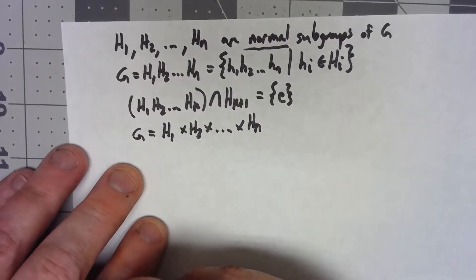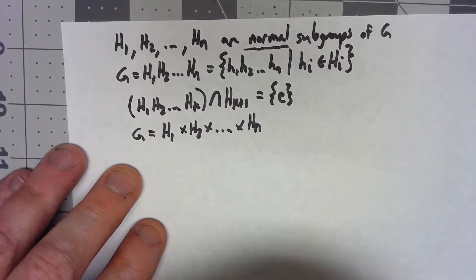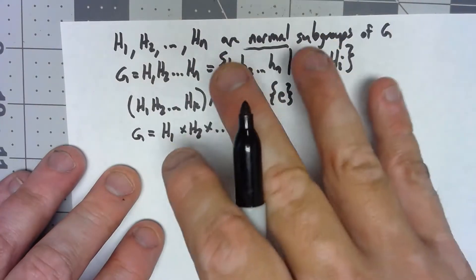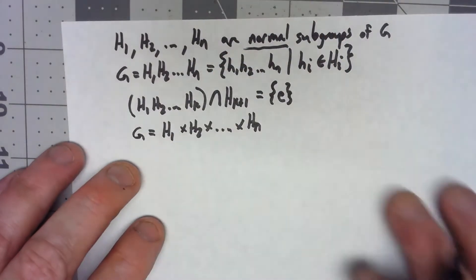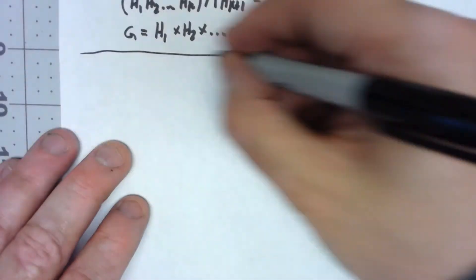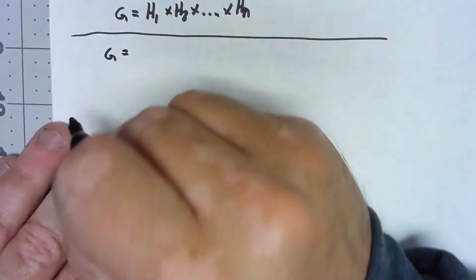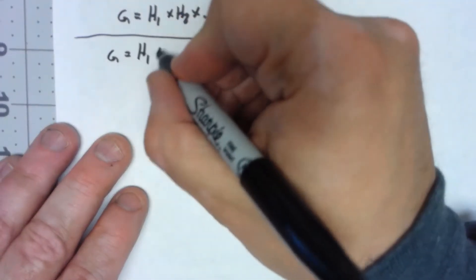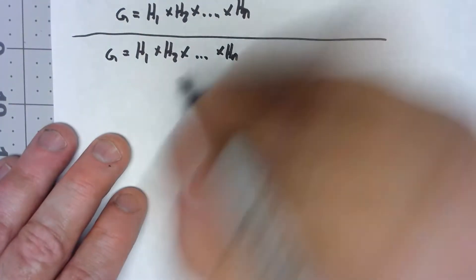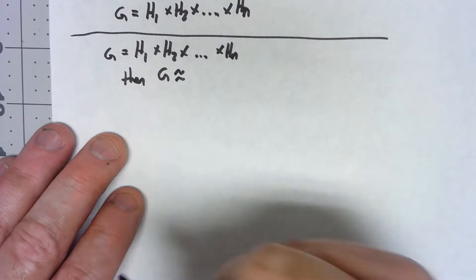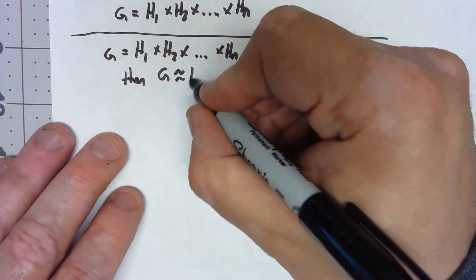Now I slipped up just a little bit there. I said is equal to the direct product and I didn't specify internal direct product. That's mainly because it turns out that it doesn't really matter. If we have G is equal to this internal direct product of a bunch of groups that we just defined, then G is in fact isomorphic to the external direct product of those things.